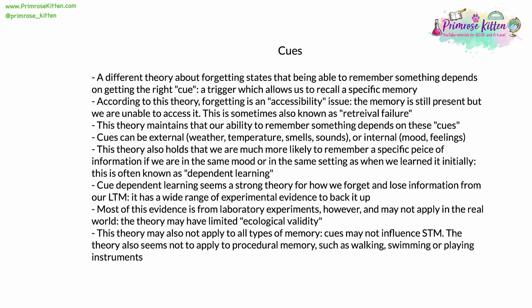Cue-dependent learning seems a strong theory for how we forget, especially from long-term memories, and it has a wide range of experimental, peer-reviewed, repeatable, and scalable evidence. However, like interference theory, most of this evidence came from laboratory experiments, giving it limited ecological validity. Additionally, cue theory may not apply to all types of memory — we don't know if cues influence short-term memory, and the theory seems not to apply to procedural memory like walking, swimming, or playing instruments, where remembering doesn't seem dependent on mood or external cues.